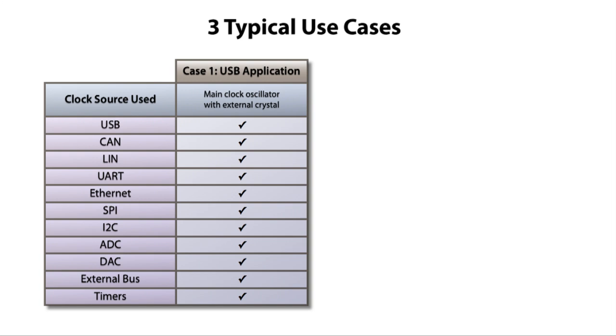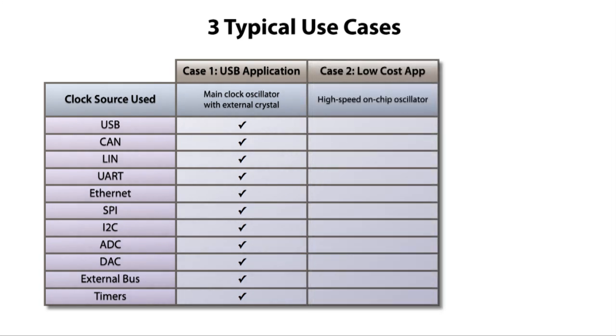Now, let's consider a second case for a low-cost application in which no external crystal is used. In this case, the high-speed on-chip oscillator is used as the clock source, and while it is capable of generating the clock for most of the modules, it does not have the precision required to generate the clock for the USB, CAN, LIN, and UART, which is fine as long as those modules are not used in the application.